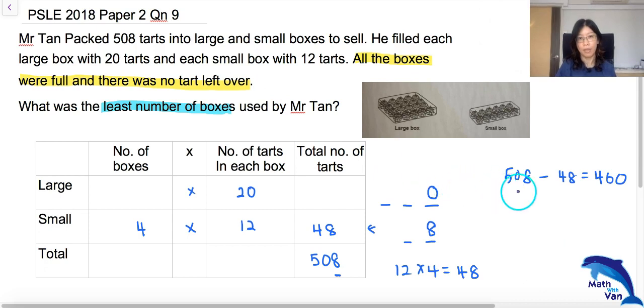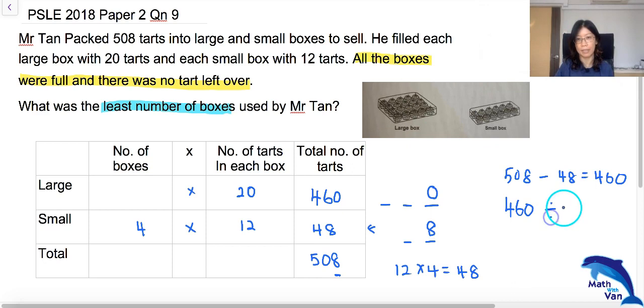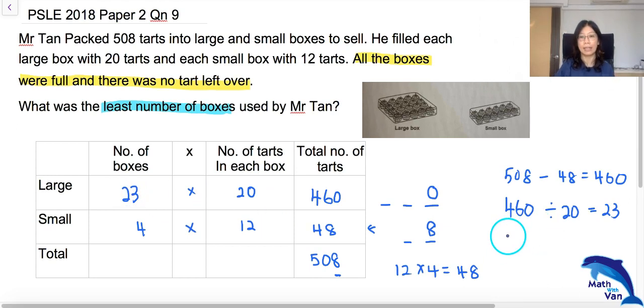If this is 460 here, which is the total number of tarts that came from the large boxes, so how many large boxes are there? Divided by the number of tarts in each large box, and that will give you 23. So this is 23 over here. Now you would have that only combination that will satisfy all the conditions here, and that gives you a total of 27, being the least number of boxes and yet all the boxes were completely filled.